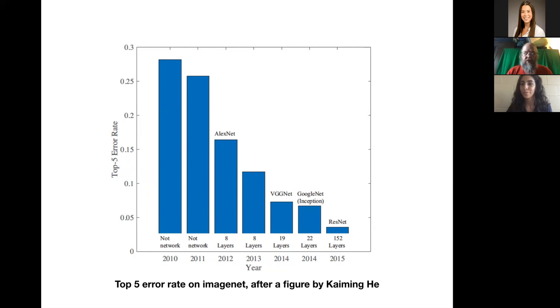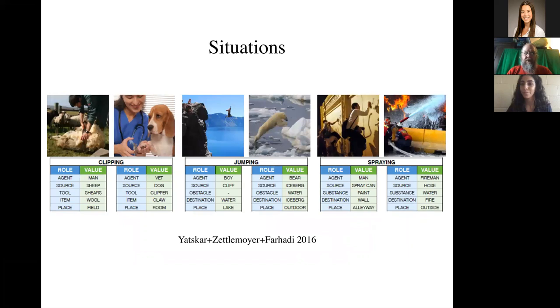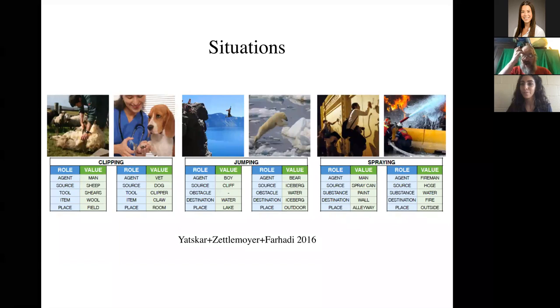Now, an important thing to keep in mind is that image classification covers an awful lot of ground. I made it sound as though I was talking about a situation where you've stuck a picture in and you've got the label cat out. But the thing you get out might have extremely complex semantics. Here's an example from Mark Yatzke and Luke Zettelmaye and Ali Fahadi from about four years ago, where the thing you get out is in fact a fairly complicated template with roles that have been filled in. So for the two images on the left, the image has been classified as clipping, but the clipping label also says the person who's doing the clipping is a man. The thing that's getting clipped is a sheep. They're being clipped with shears. What's being made is wool and it's happening in a field. And that can be done for jumping and spraying. And you'll notice a completely different clipping next to it, where a vet is cutting claws off a dog with a clipper in a room. So this kind of classification produces really very complex semantically deep labels.